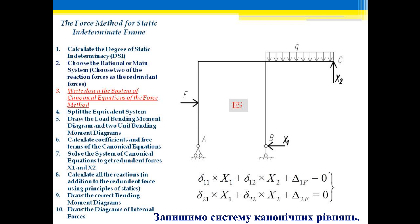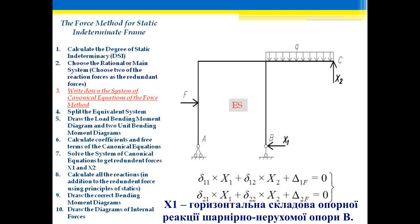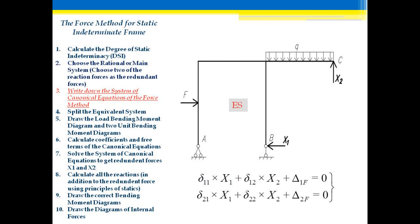Next, write down the canonical equations of the force method. There are two unknowns: X1 and X2. X1 is the horizontal force of the support reaction at point B, and X2 is the vertical support reaction at point C.